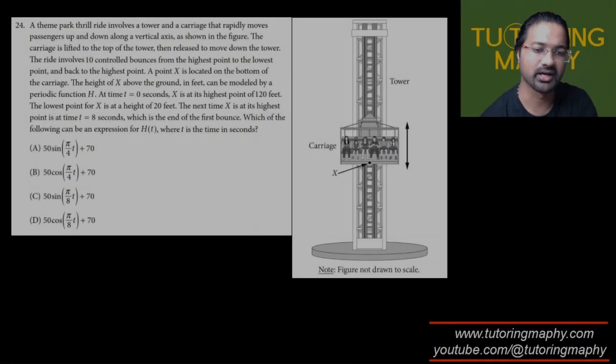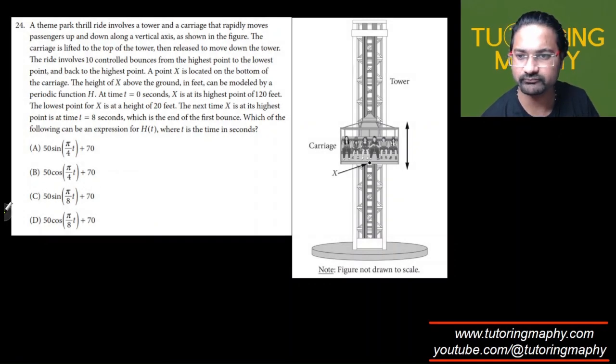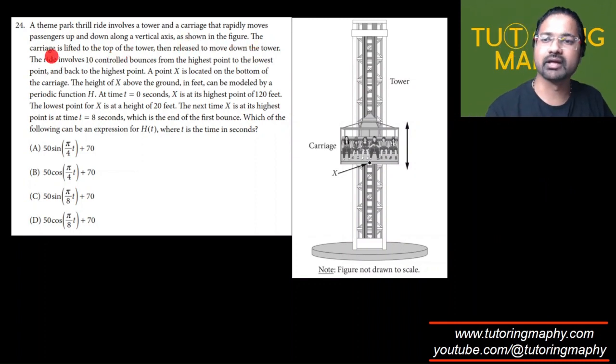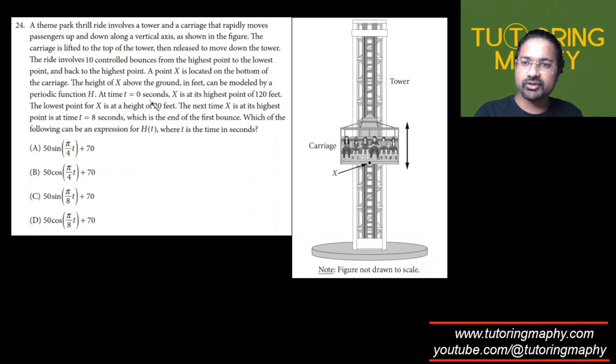The last question we have here is a theme park thrill ride that involves a tower and a carriage that rapidly moves passengers up and down along a vertical axis as shown in the figure. The carriage is lifted to the top of the tower, then released to move down. The ride involves ten control bounces from the highest point to the lowest point and back to the highest point.